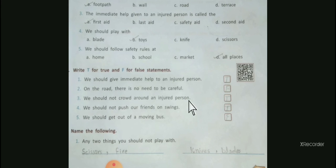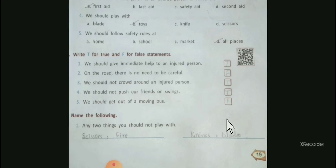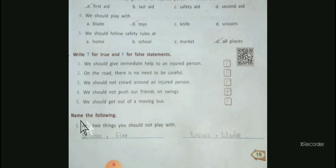Number four: We should not push our friends on swings. This is true. Number five: We should get out of a moving bus. This statement is false. Section C: Name the following.